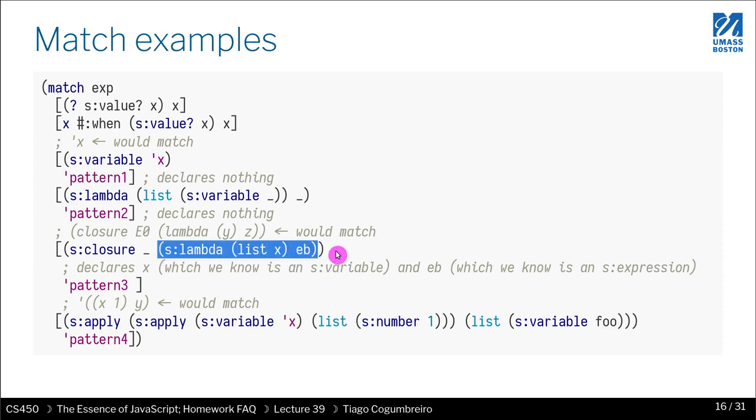On the right hand side, we have actually a lambda that has exactly one argument. We don't know what that argument is, but we're going to assign that to x. And the body, I'm going to call it EB.